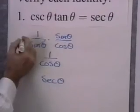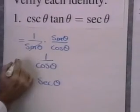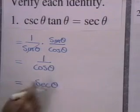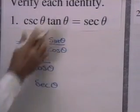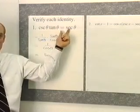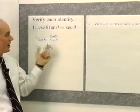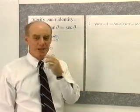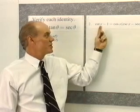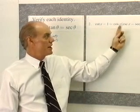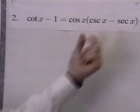Cosecant theta times tangent theta equals this expression, which in turn equals 1 over cosine theta, which in turn equals secant theta. We've succeeded in showing that cosecant times tangent is always equal to secant theta. Now let's look at our next identity. In this case, we want to show that cotangent x minus 1 is the same as cosine x times the quantity cosecant x minus secant x.